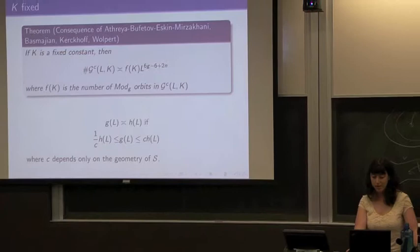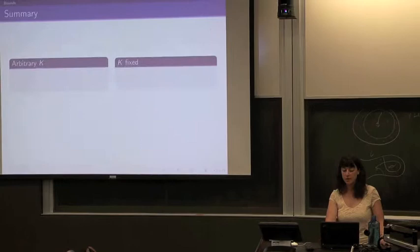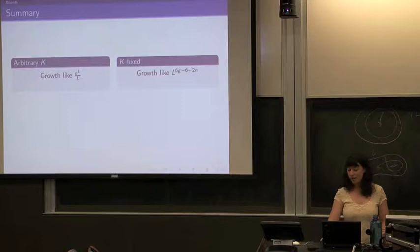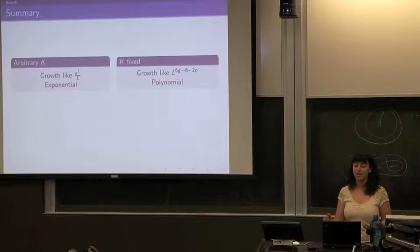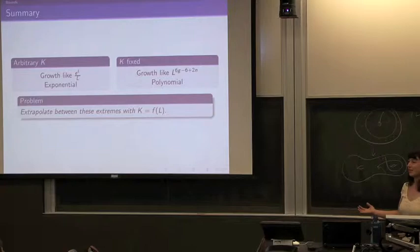The general case is not known. For an arbitrary K, we have exponential growth, and for K fixed, we have polynomial growth. The problem is to interpolate between these two things — there have to be some functions that go between polynomial and exponential.